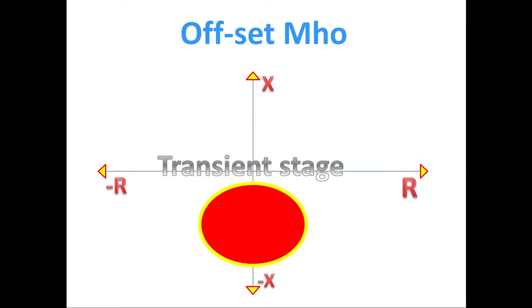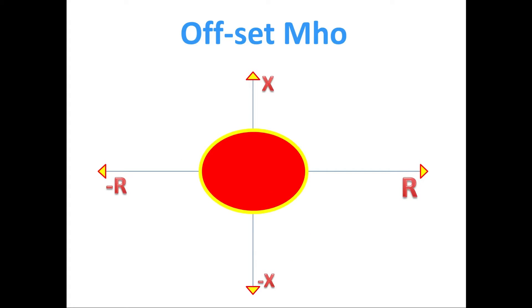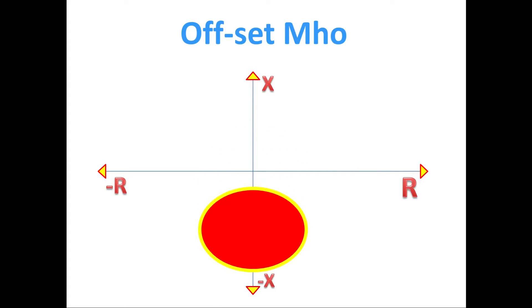We all know the Mho characteristics, but what is meant by offset Mho? The name offset means just below or above zero axis. Next we have a doubt, why we go for offset Mho? For offset Mho, we have name Xd dash by 2. And diameter of the Mho is Xd.